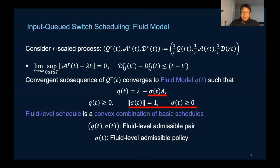Sigma of t is the control process and it consists of convex combination of basic schedules. Let's talk about specific measures, reflecting that the stochastic schedule policy can be random.